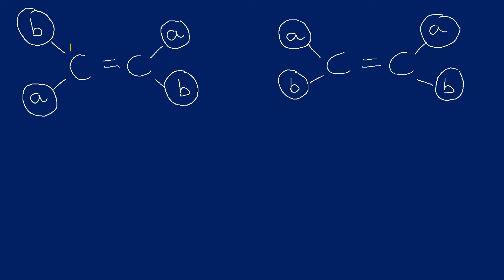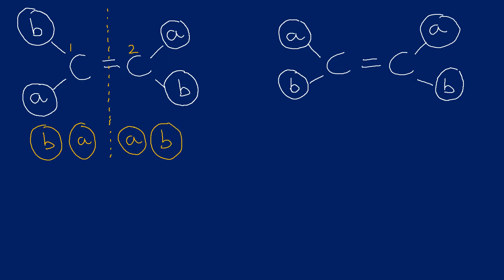Focusing on the alkene on the left, I'm identifying the two carbons either side of the double bond and labeling them carbon one and carbon two. Carbon one has a group B attached and an A attached. The carbon on the right has an A and a B, which are the exact same groups attached to carbon one. So this would be classed as a symmetric alkene because we've got the same groups attached to both carbons.